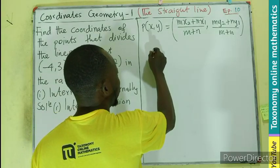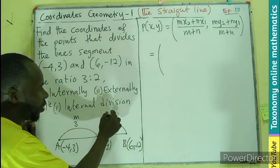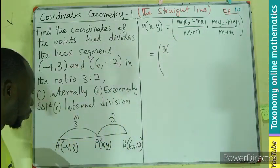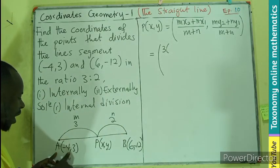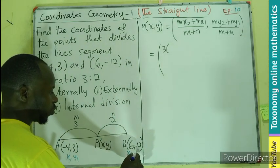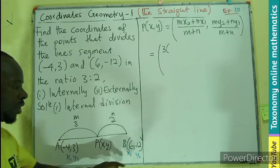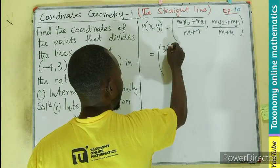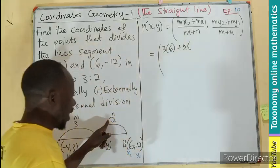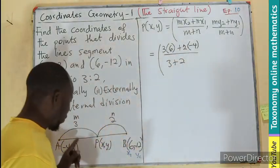Now we are just going to do substitution. M, which is 3, so this is your M, the first ratio, and the second ratio will be the N. So 3 times X2. Don't forget, this is the first point, second point. So X1, Y1, X2, Y2. So if I take 3, I am taking the X2, meaning 3 will multiply 6. Plus N, which will be 2, multiplying X1, that will be -4, all divided by 3 plus 2, the ratio M plus N.